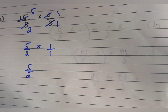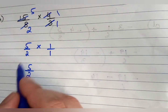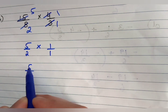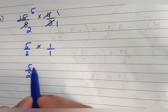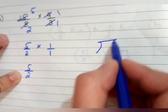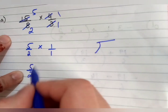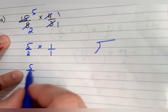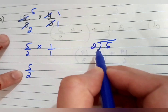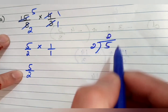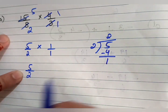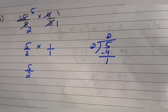This fraction 5 by 2 is an improper fraction because the numerator is bigger than the denominator. We need to convert it to mixed form. To do that, we divide 5 by 2: 2 twos are 4, 5 minus 4 leaves a remainder of 1.